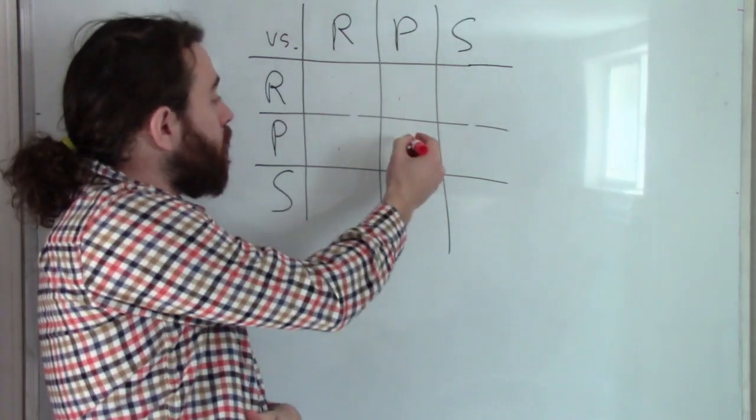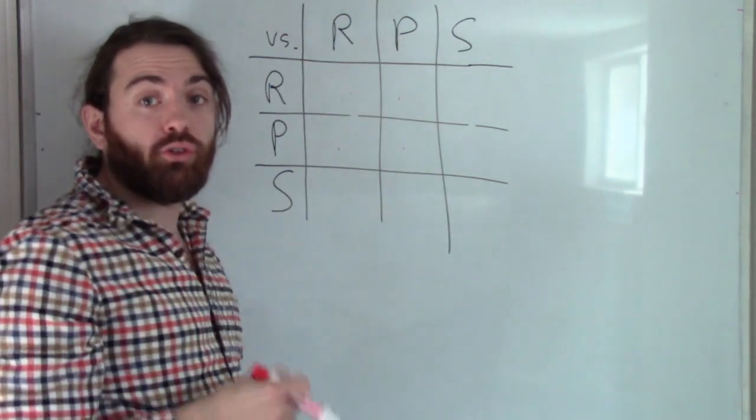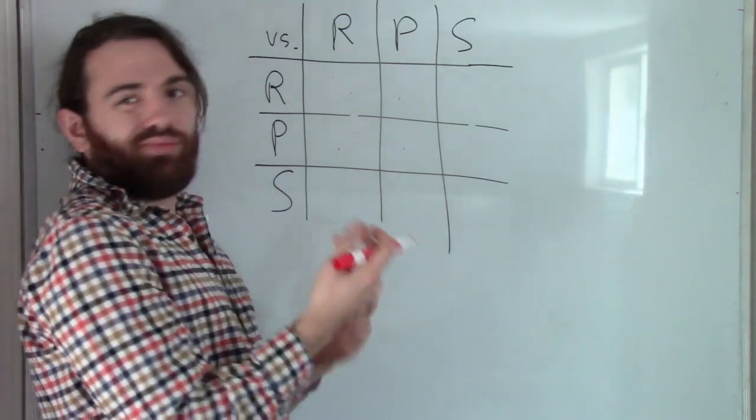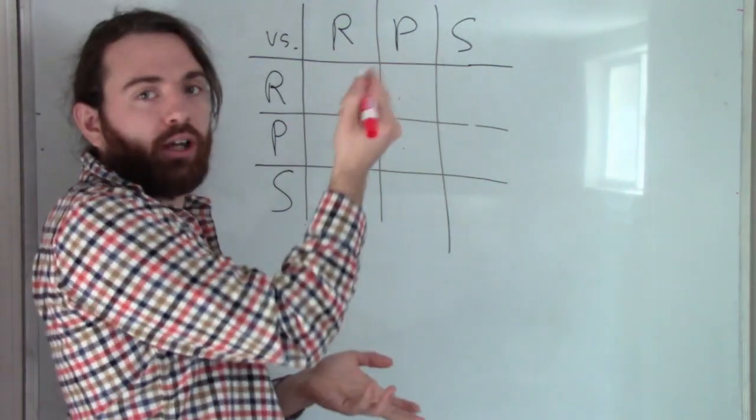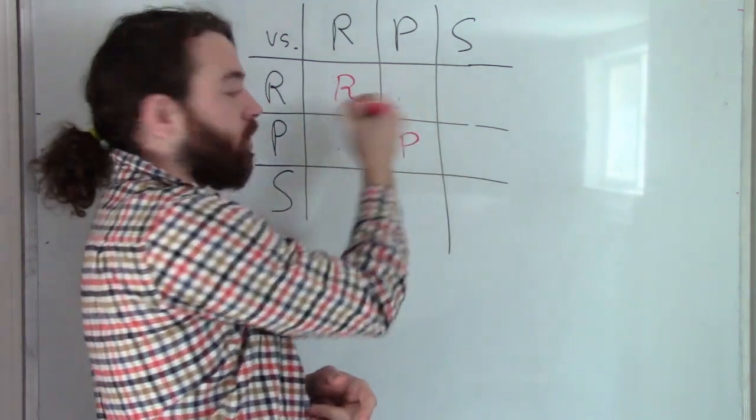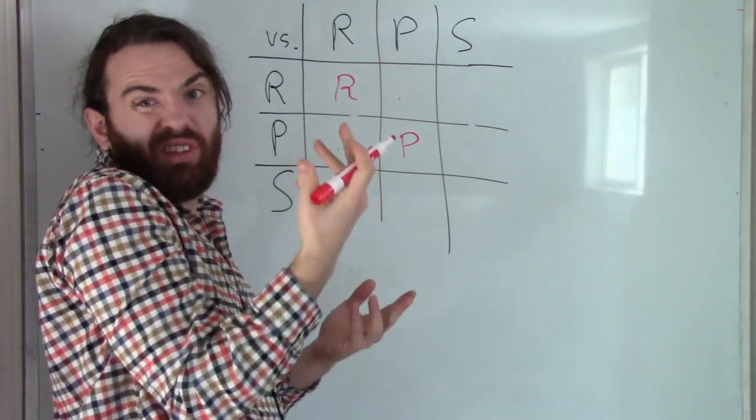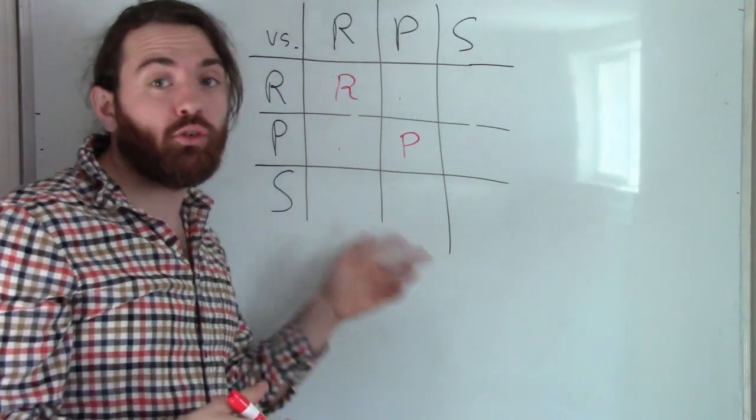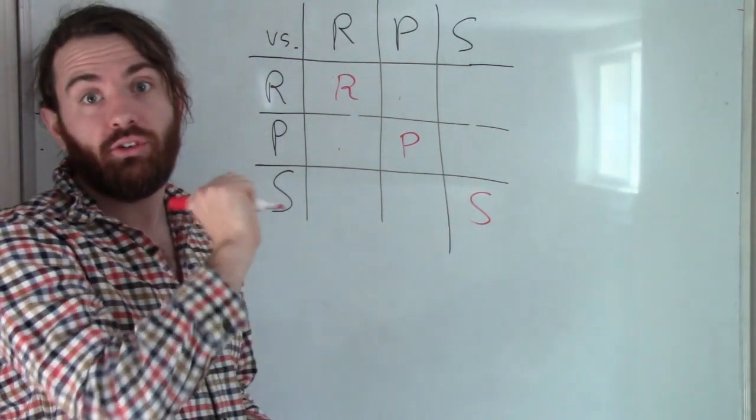Now for rock versus rock, paper versus paper, scissors versus scissors, those are all a tie. So I mean I could fill it in with whatever, I could just write tie. But just to keep it to the symbols we have, I'm going to write it as rock versus rock is rock, because in some sense they both win. Paper versus paper is paper, scissors versus scissors is scissors.